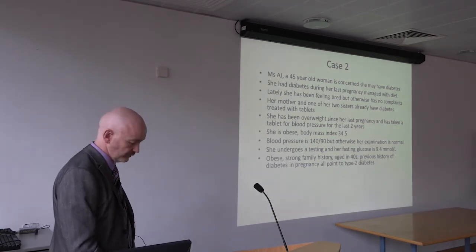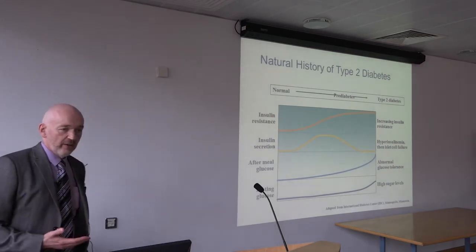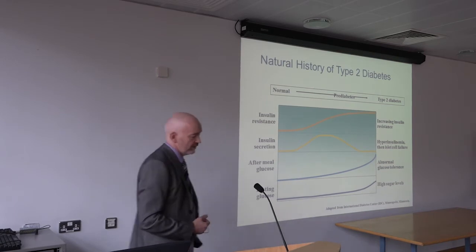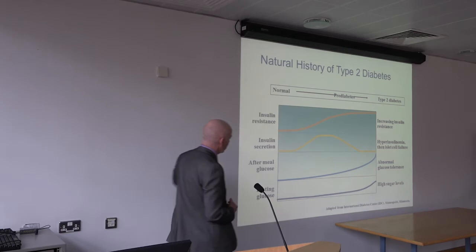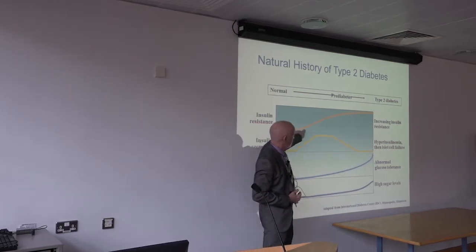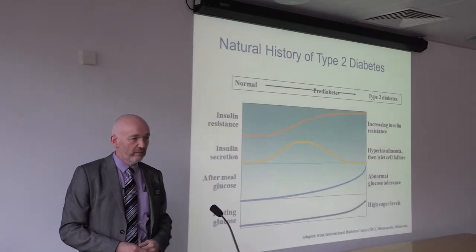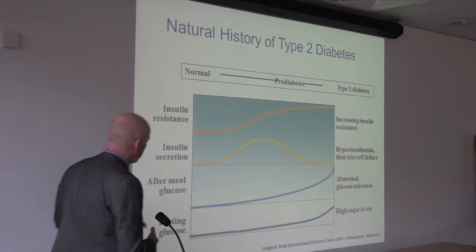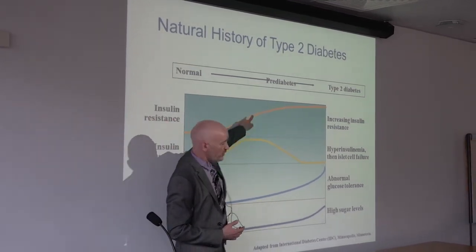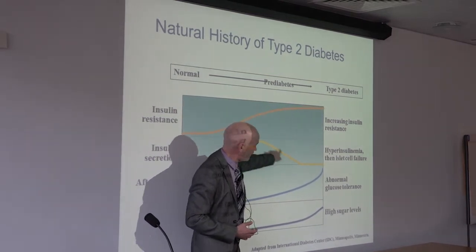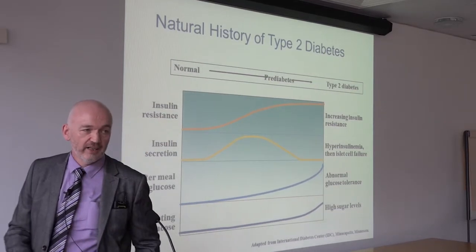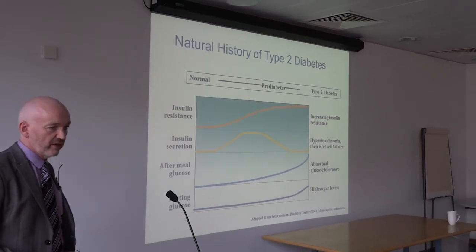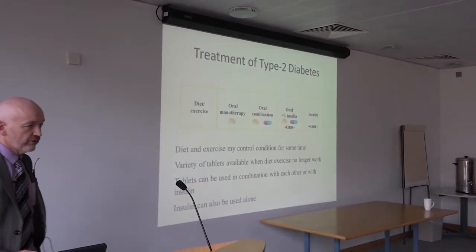Type 2 diabetes is caused by the body becoming resistant to insulin, a process that probably develops over many decades. In the early stages, the pancreas compensates by making more insulin, so insulin levels rise. Eventually it can no longer compensate, insulin production starts to fall, and blood sugar levels rise. That is how we think type 2 diabetes develops.